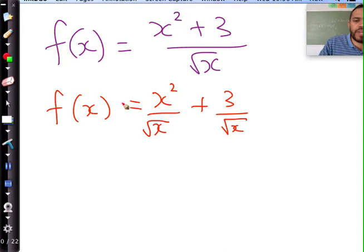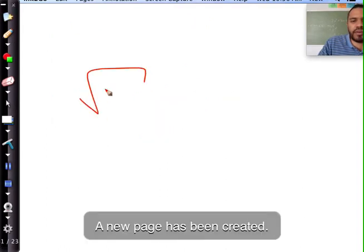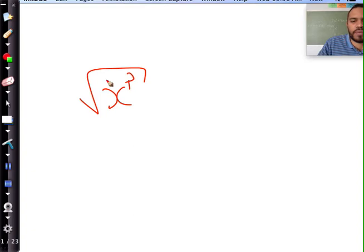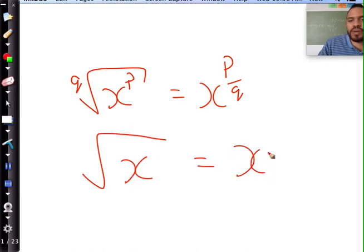Now people, square root x, let me just go to something here quickly. You already know that the q root of x to the power of p is equal to x to the power of p over q. So if I have square root of x, that's the same as saying x to the power of 1 over 2. Because there's my 1 and there's a 2.